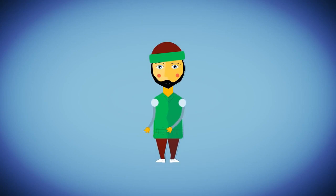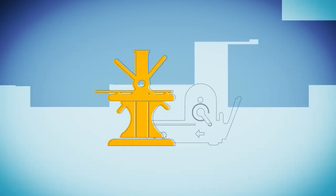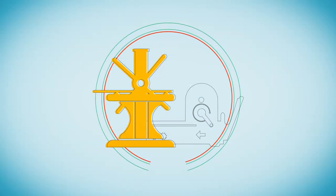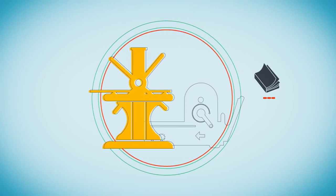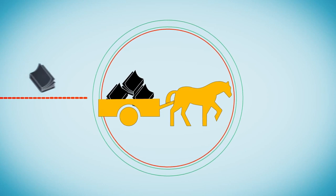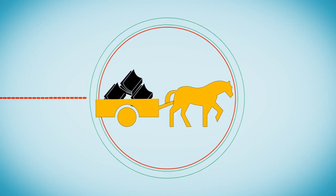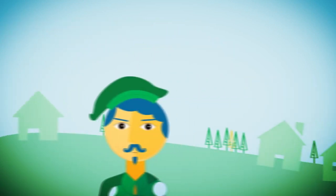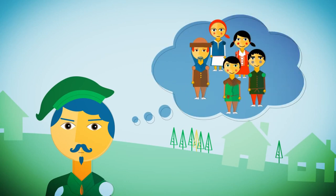Along came the first ever copying machine. The printing press. It forever revolutionized the way people spread information. Here at last was a cheap and quick way to make copies of books, and a very accurate one too. The writers of course were thrilled to have more published books and a lot more readers.